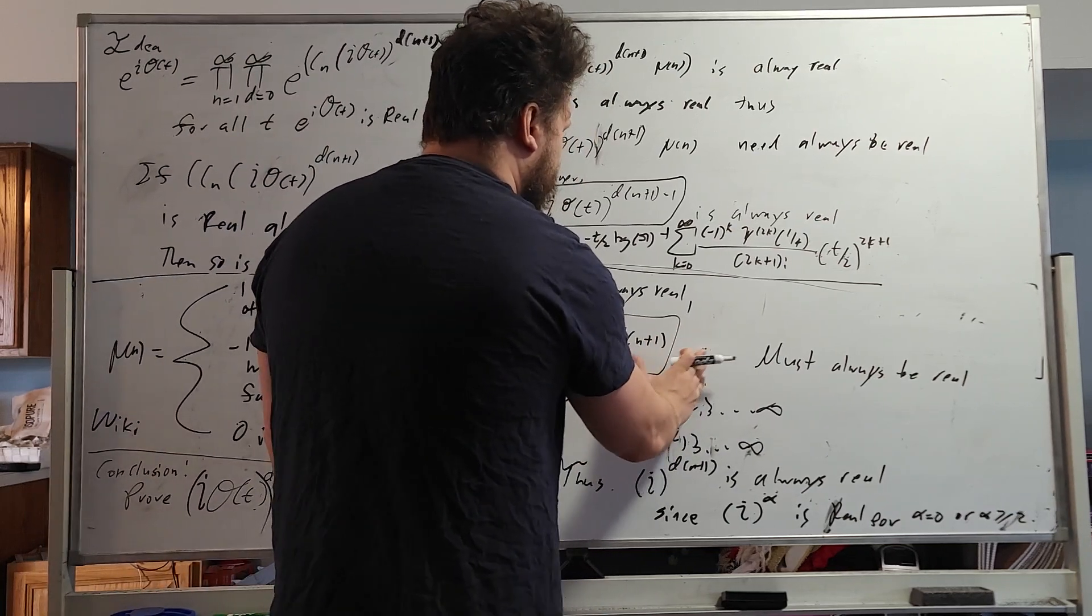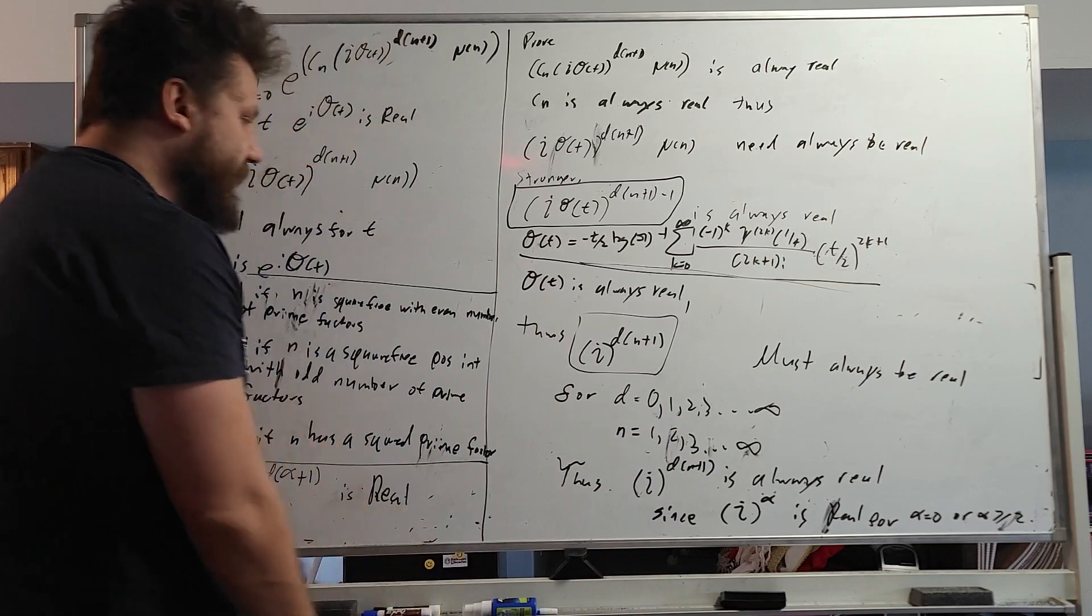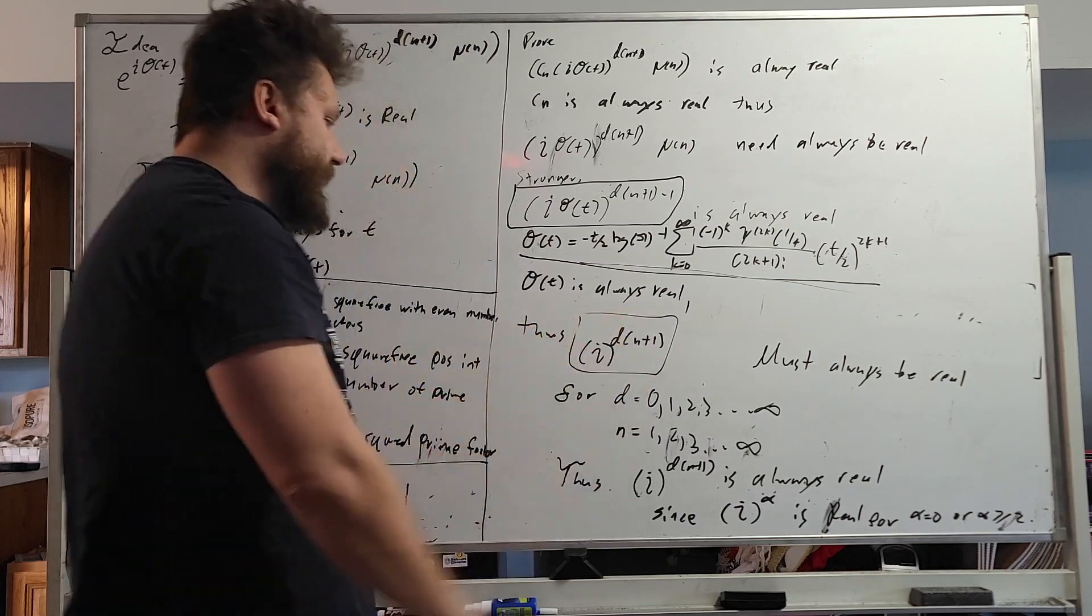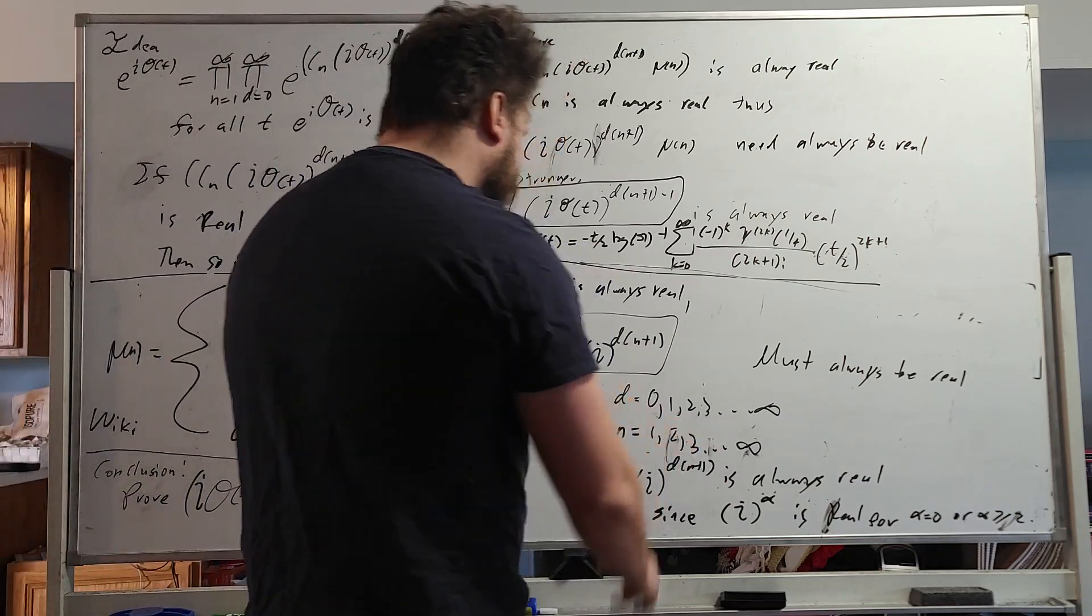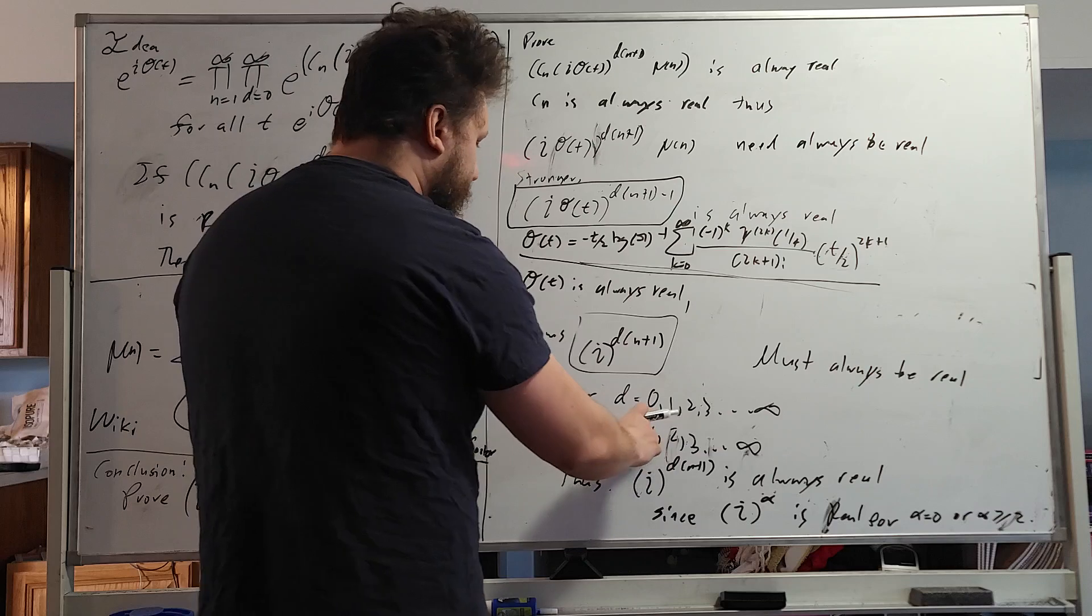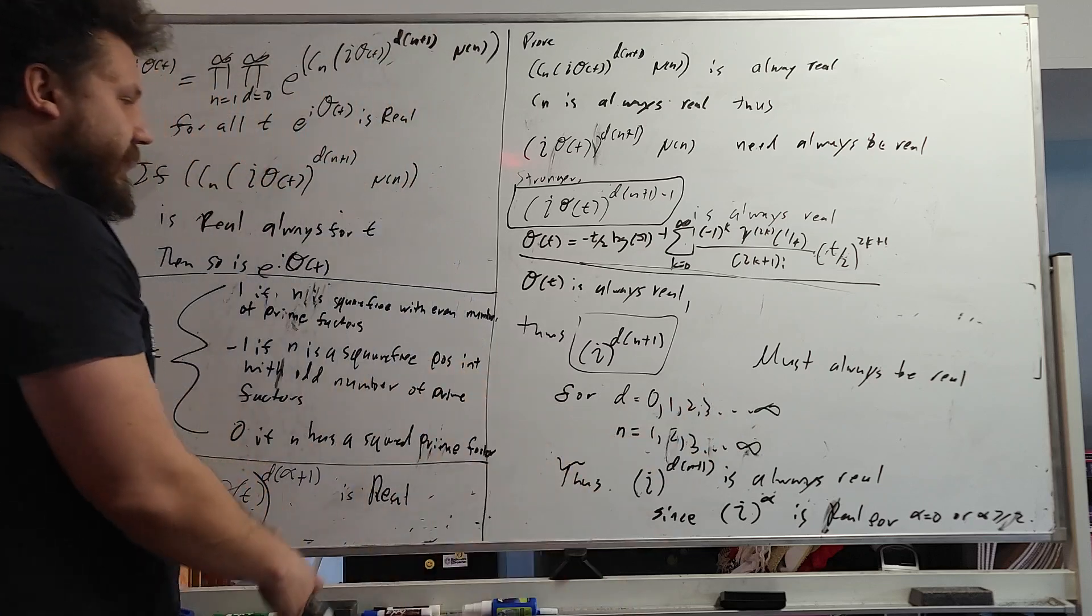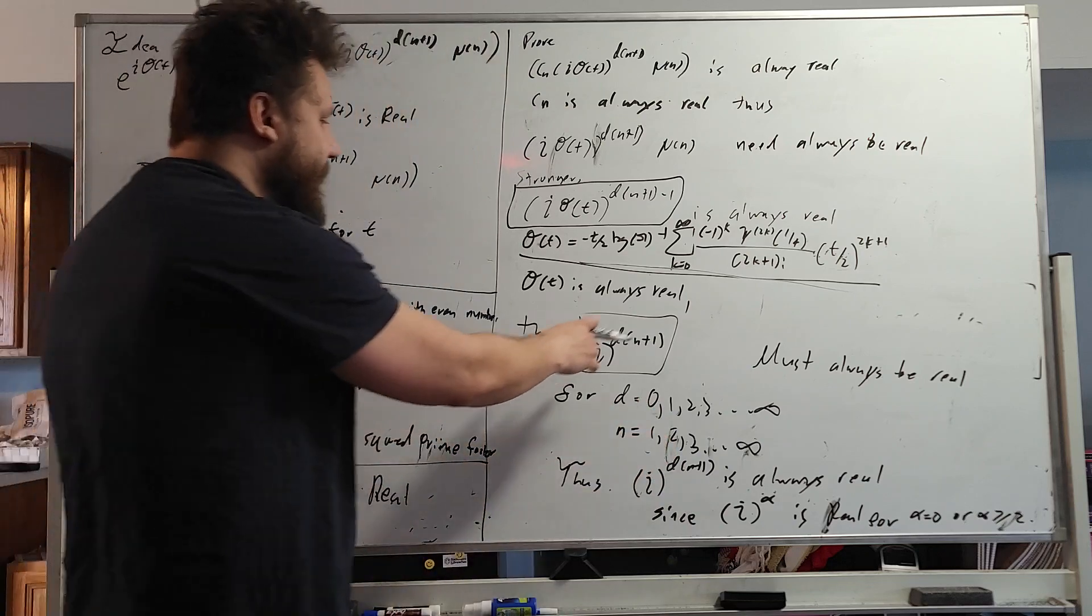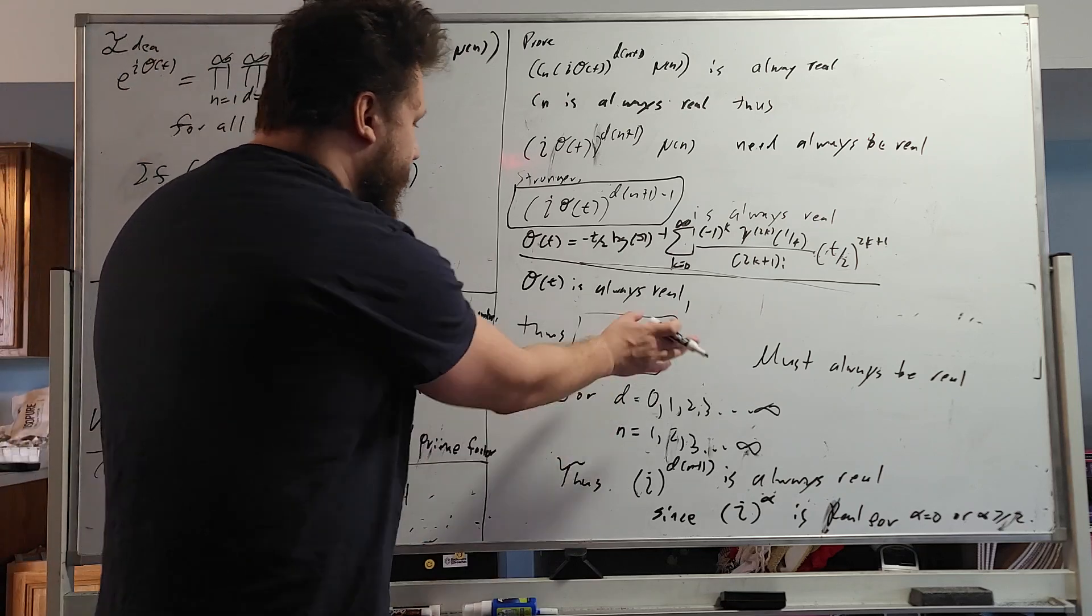And Mobius n is always real, so we don't really look at that. All right. So the idea is that this is always real because essentially d starts at 0. So if you have i to the 0, it's 1. And you have all of this stuff. n equals 1, 2, 3, whatever. But notice that basically n plus 1, so it will always start at 2. So this right here will be either 0, 2, or greater. So if you have i to anything higher than 2 or 2 greater, then it becomes real.